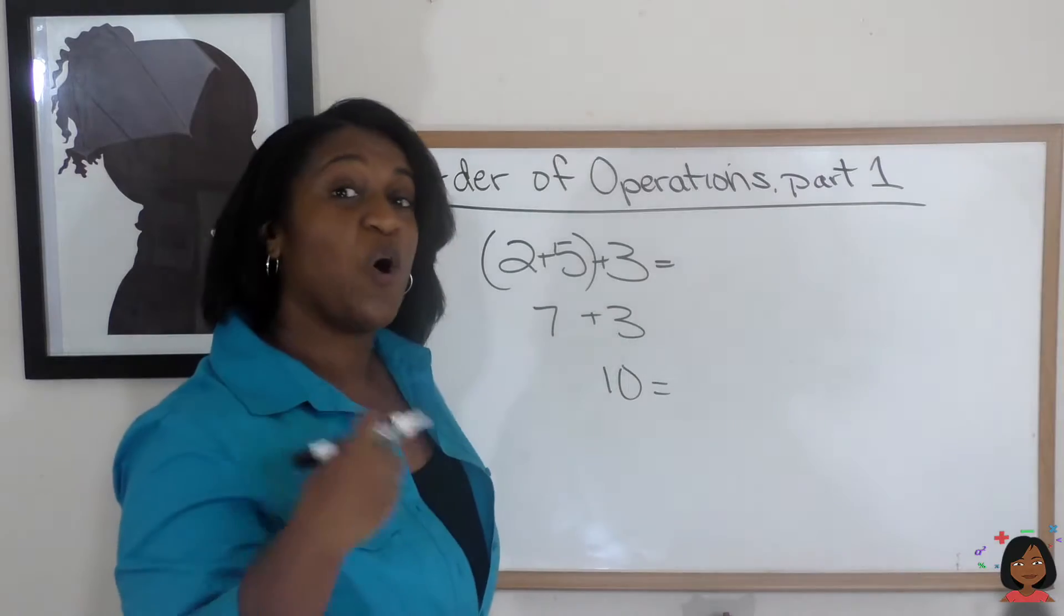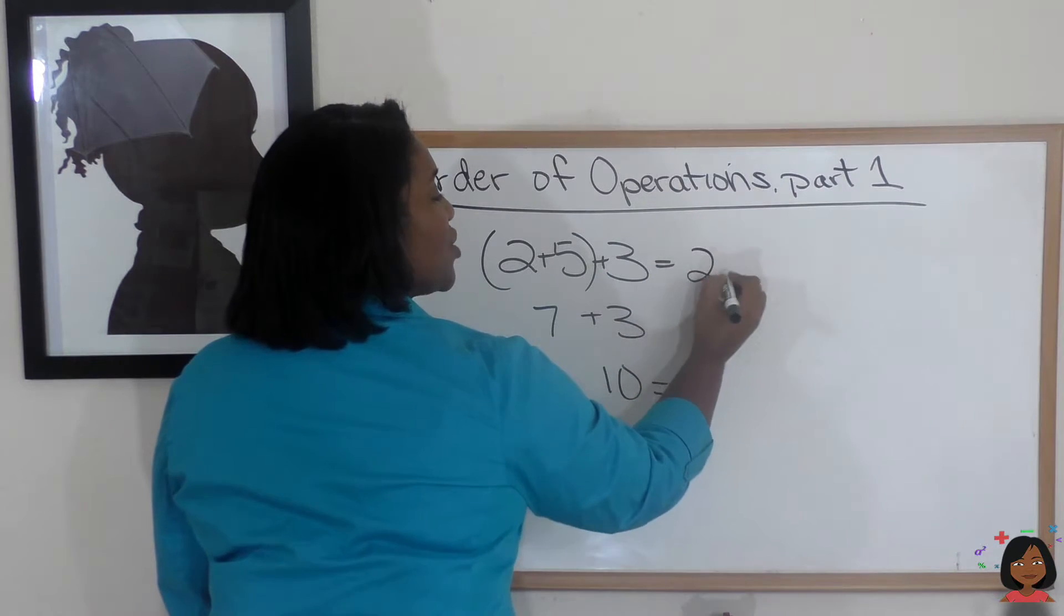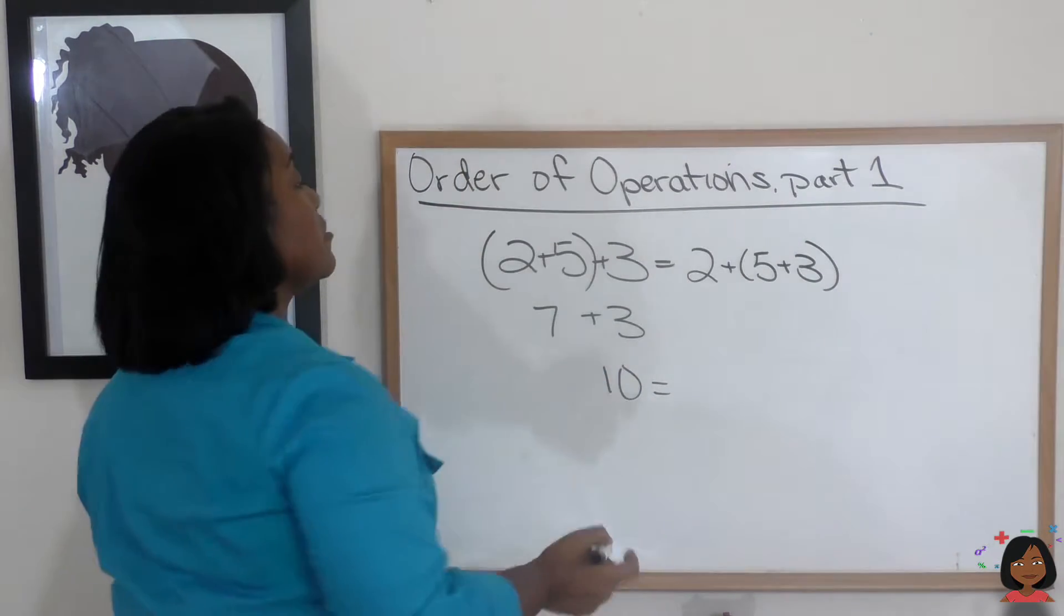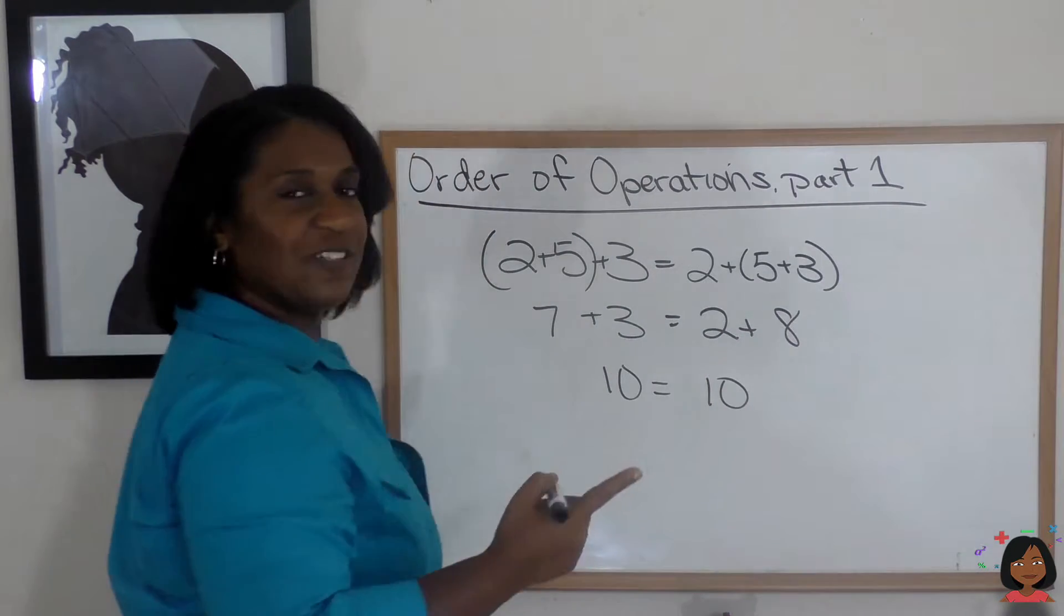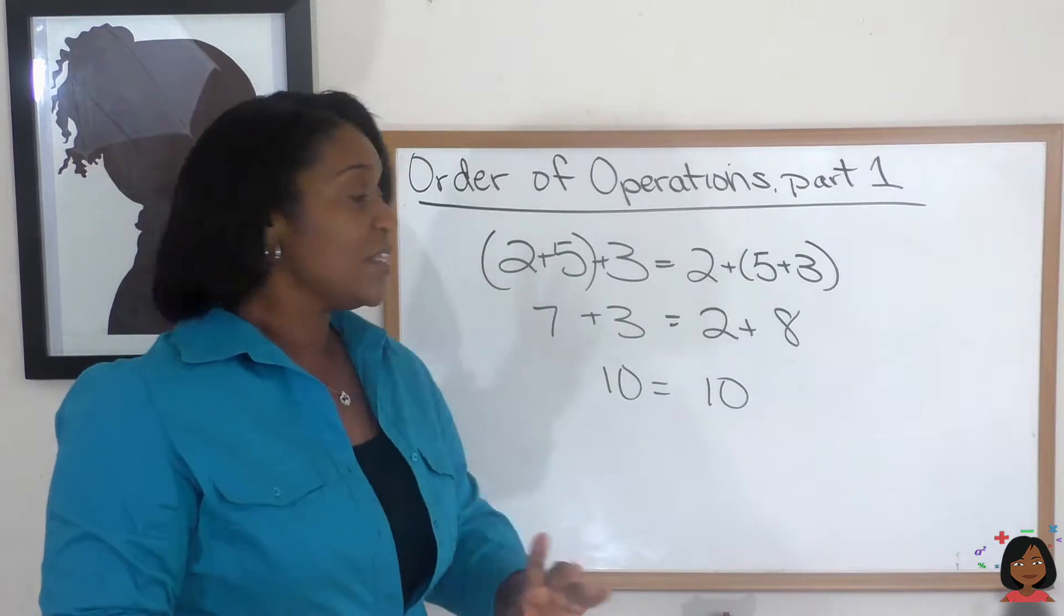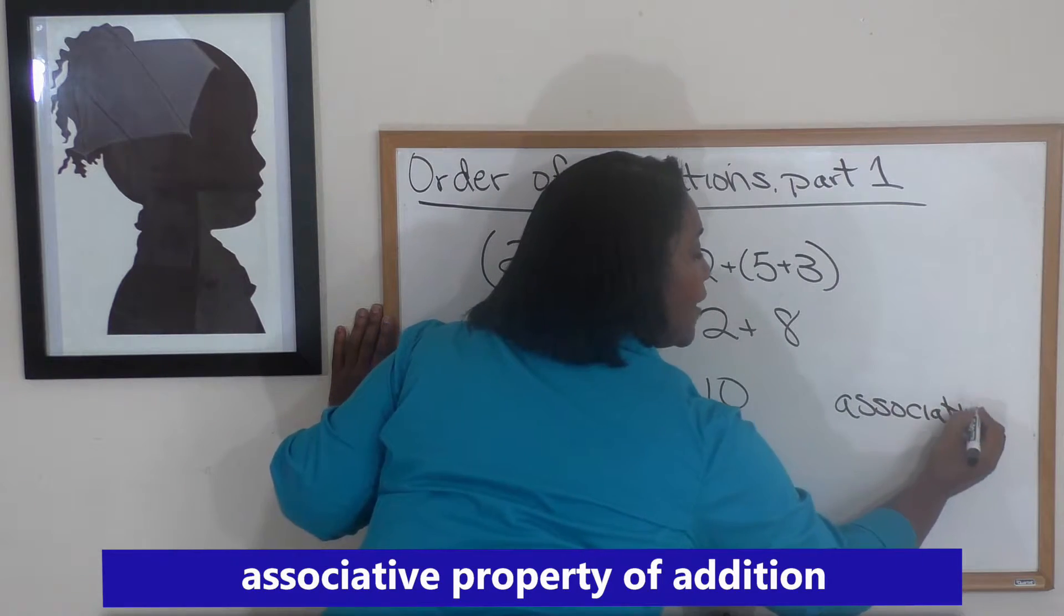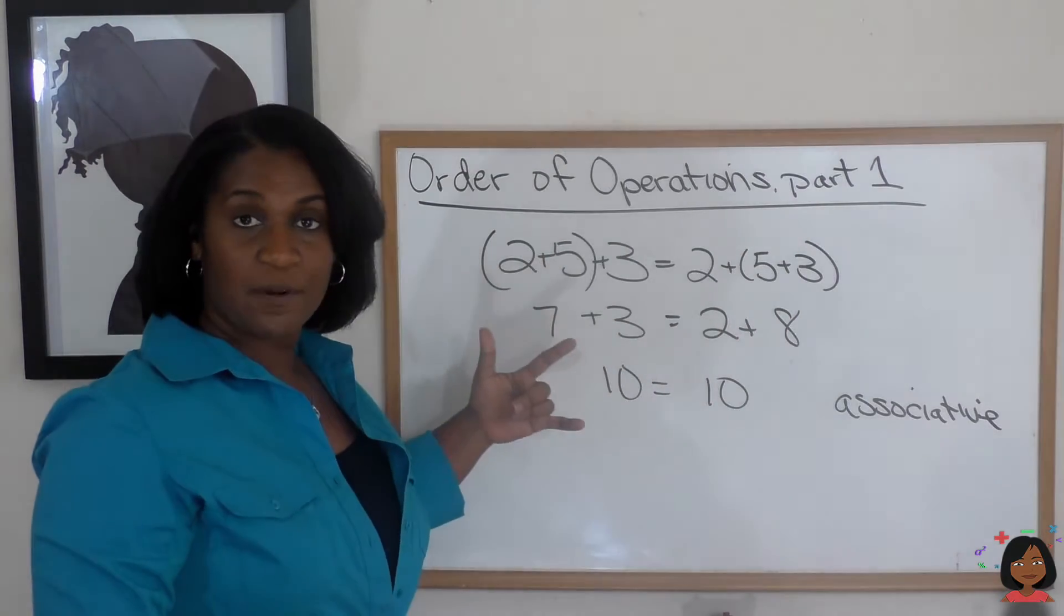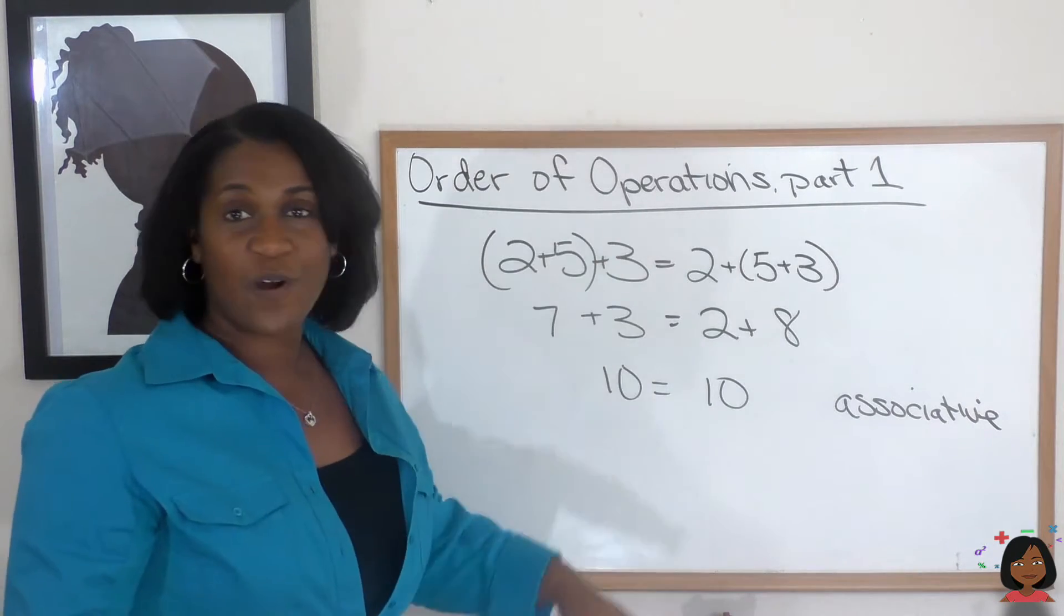Now as I told you, we always do what's in the parentheses first because it might give us a different answer. But let's say I take these same numbers and I change the parentheses to put them around the 5 and the 3. Let's see if our answer changes. 5 plus 3 is 8. 2 plus 8 is 10. Oh, look at that. Our number did not change and we had parentheses. How can that be? Well, that means that with addition we have something called the associative property of addition. That means it doesn't matter in which order you do the numbers in the parentheses. It still will equal the same number. Now you need to know this does not work for subtraction.